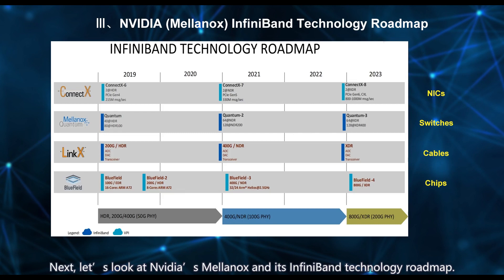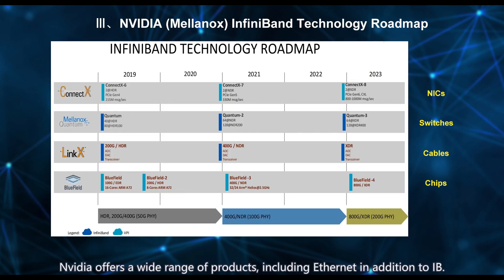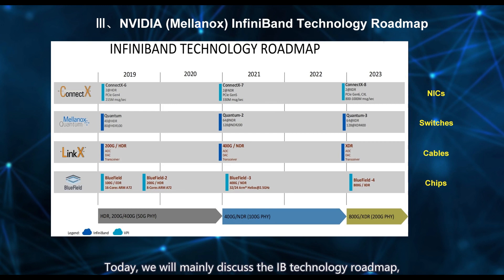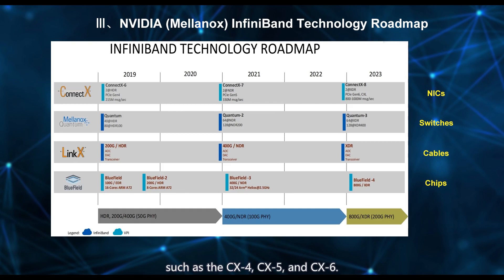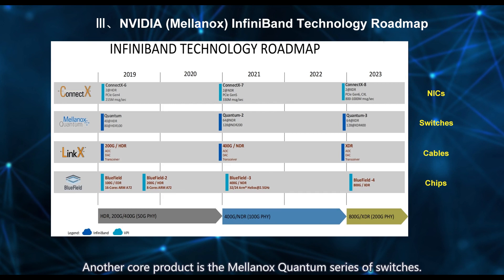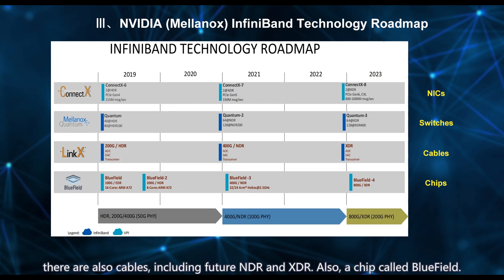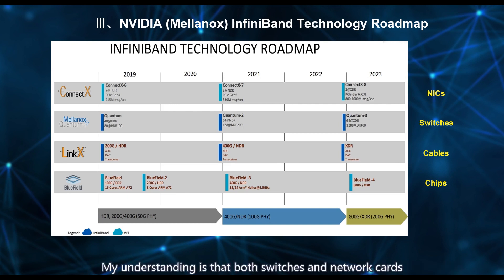Let's look at NVIDIA's Mellanox and its InfiniBand technology roadmap. NVIDIA offers a wide range of products, including Ethernet in addition to IB. The IB technology roadmap includes four layers and various products. One such product is the network card, such as the CX-4, CX-5, and CX-6. The CX-6 supports HDR 200G networks. Another core product is the Mellanox Quantum series of switches. In addition to network cards and switches, there are also cables, including future NDR and XDR, and a chip called Bluefield. Both switches and network cards utilize this chip to achieve the necessary rates for interface transmission.